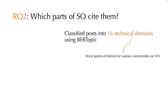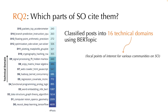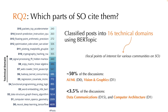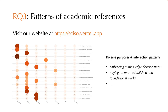Next, we categorized the posts citing academic research into 16 technical domains that serve as focal points of interest for various communities on Stack Overflow using BurtTopic. We discovered that discussions related to AI and vision are the most active in integrating academic insights, whereas more traditional fields such as data communications and computer architecture cite academic articles less frequently.